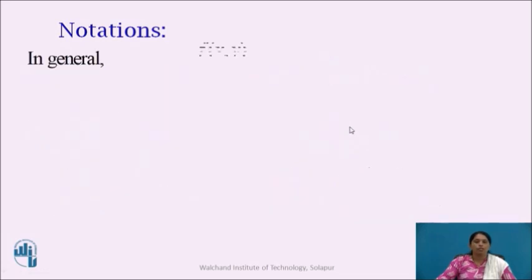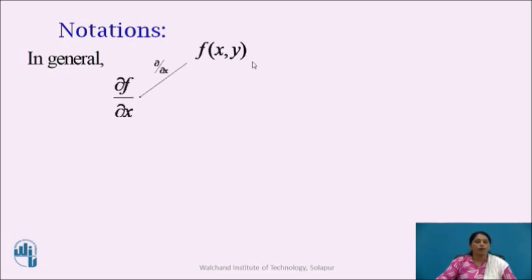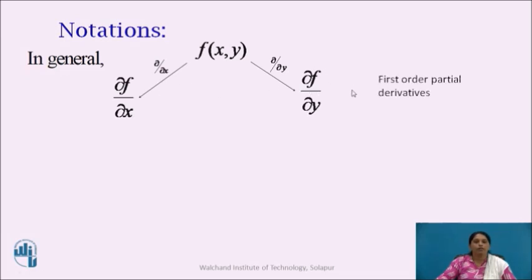In general, let f(x,y) be a function of two independent variables x and y. When f(x,y) is differentiated partially with respect to x, we get ∂f/∂x, and when differentiated partially with respect to y, we get ∂f/∂y. These two derivatives are called the first order partial derivatives.